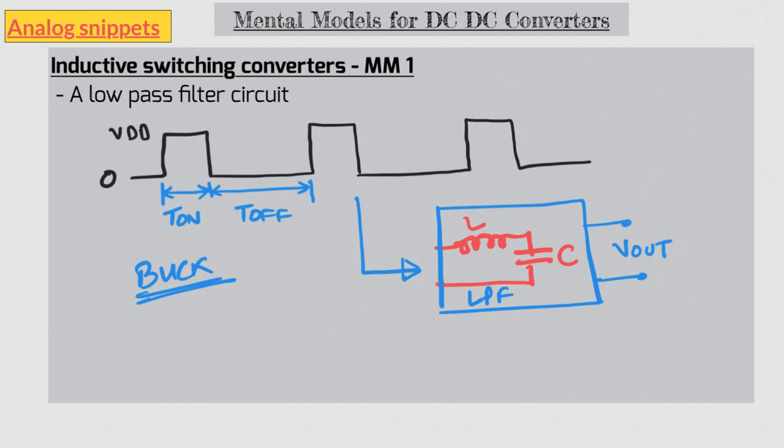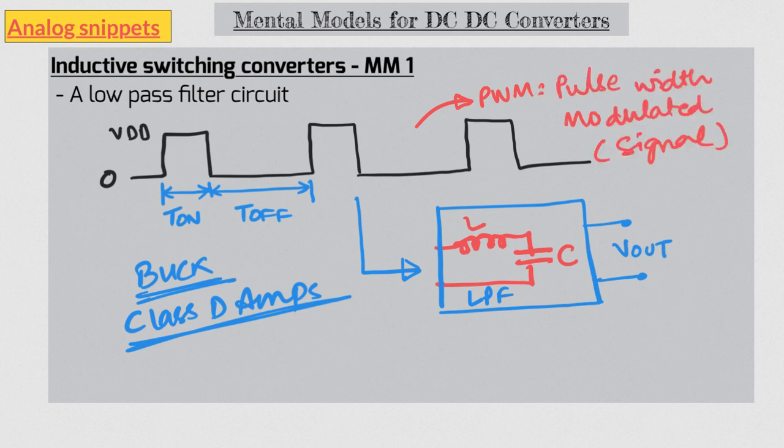Output of a buck converter is always lower than the input supply voltage. Even better, this mental model also works for class T amplifiers. This simple mental model includes some very important features of switching converters. First important feature is this pulse train itself. In switching converter universe this pulse train is known as PWM signal which stands for pulse width modulated. You will encounter PWM signal fairly regularly in switching converters.